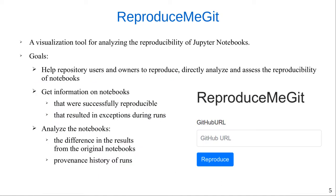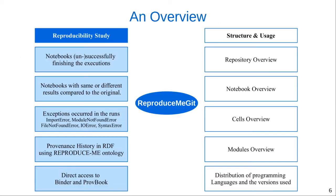Inspired by these works, we present ReproduceMeGit, an online tool where users can examine any GitHub repository and obtain an extensive analysis of different aspects of notebooks, including their structure and reproducibility features. The goal of this tool is to help repository users and owners by providing an overview of the reproducibility of notebooks in a selected repository, covering the number of notebooks that were successfully reproducible, errors that occurred during runs, differences in results from the original notebooks, provenance, history of runs, and more.